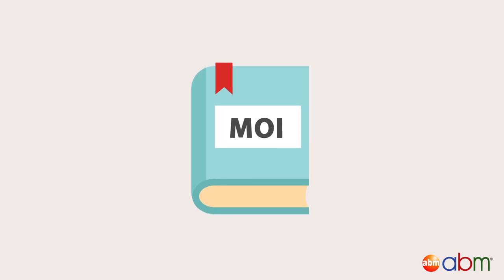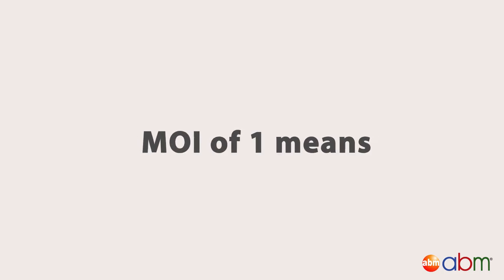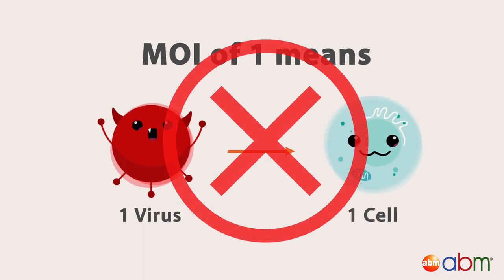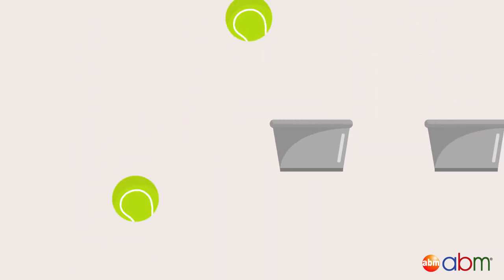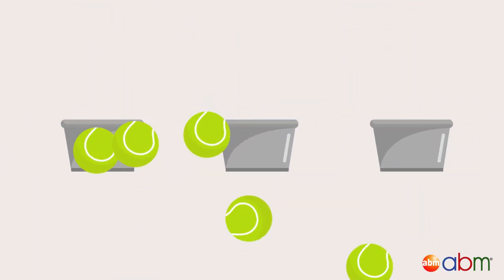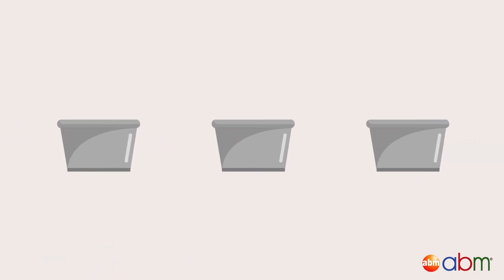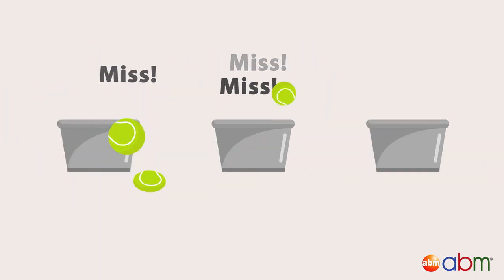Based on this simple definition of MOI, you would expect that if your MOI was 1, then each cell would be infected by 1 virus. But the reality is not as simple. Imagine yourself throwing 100 tennis balls into a room that has 100 buckets. Theoretically, there is one ball for every bucket, but in reality, the chance of every bucket getting one ball is very low.